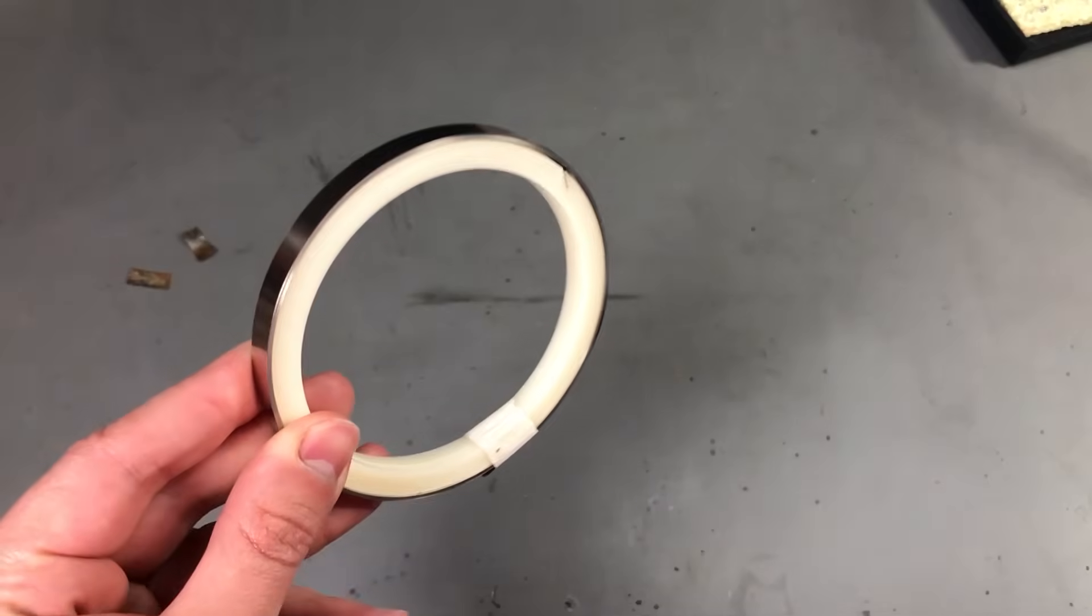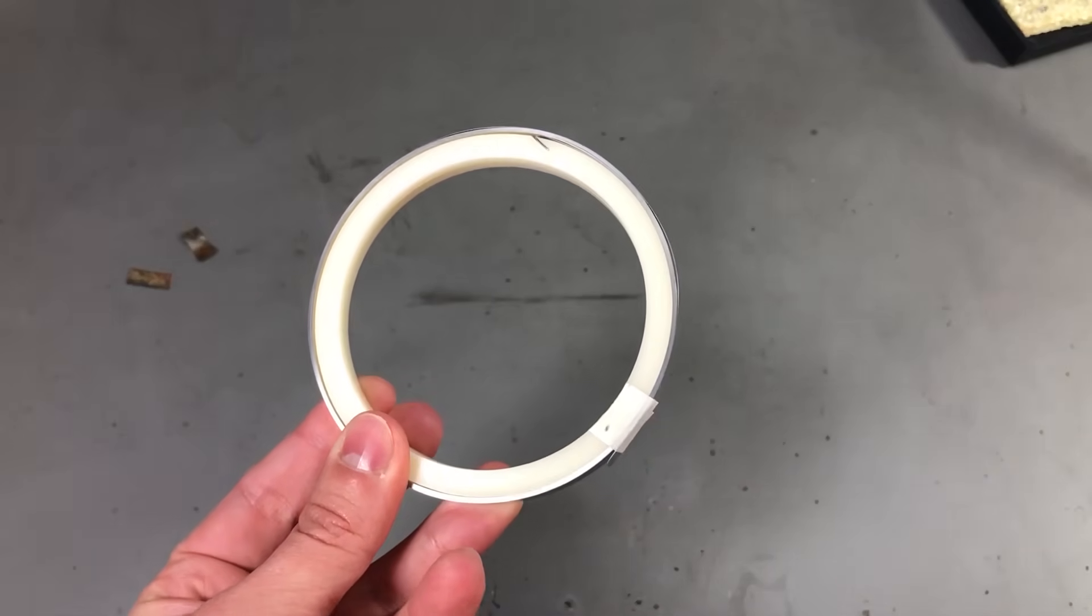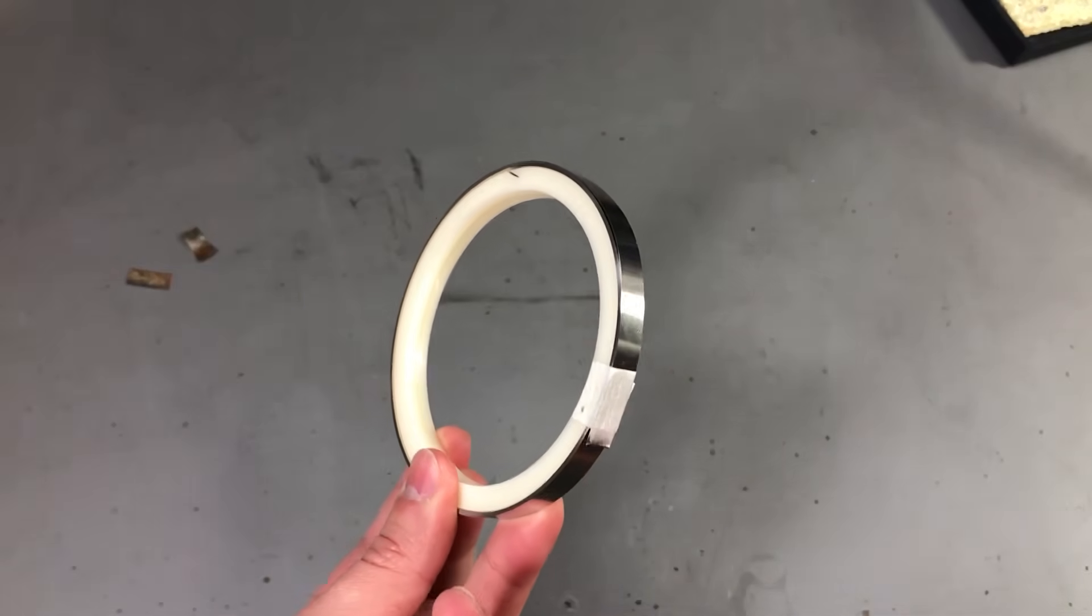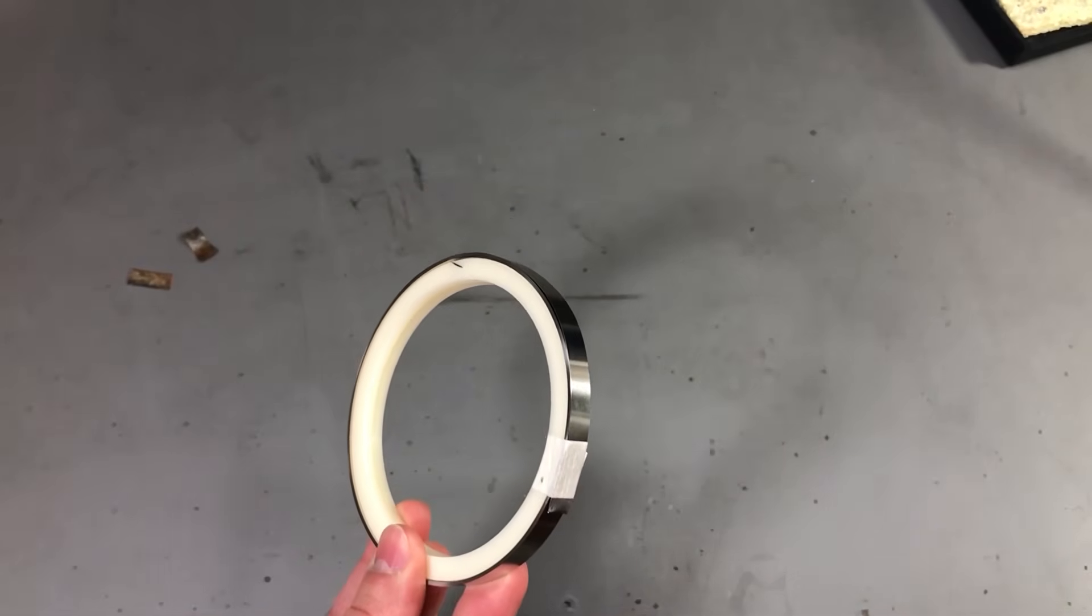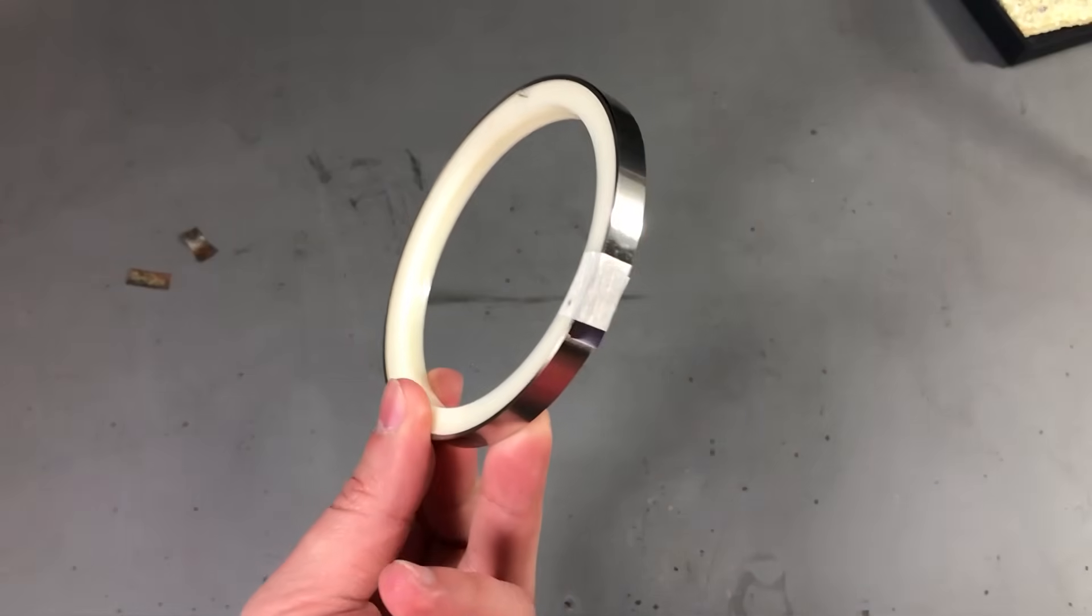So, there you have it, these are my 4 methods that should help you figure out if you have pure nickel strips or not. I would love to hear your thoughts in the comments below. If you have other ideas on how we can identify pure nickel strips, please share them in the comments below.